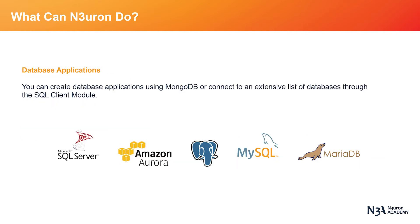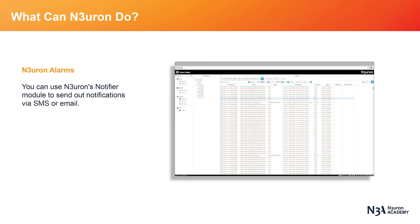Neuron can connect with an extensive list of SQL databases via its SQL client module, coupled with its visualization tools, which allows users to easily build database applications. Neuron also enables you to configure alarms directly within the web UI interface. Depending on the configuration established by the user, alarms will be triggered each time the specified conditions are matched. Neuron's Alarm System allows you to send out notifications via SMS and email.